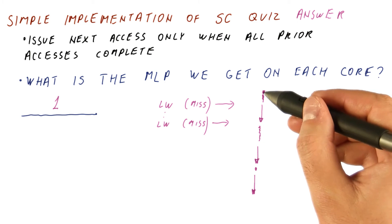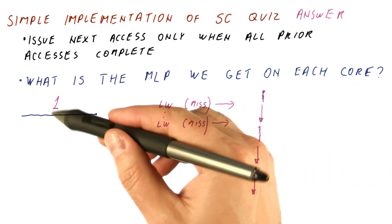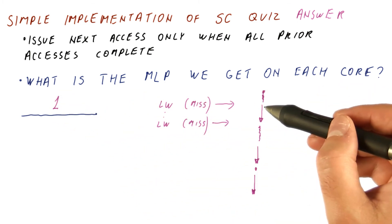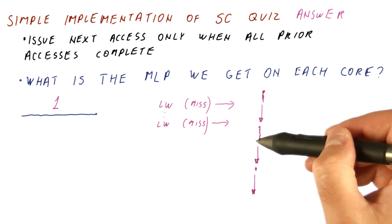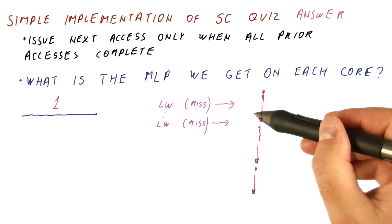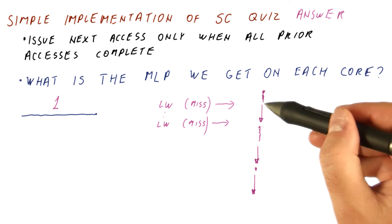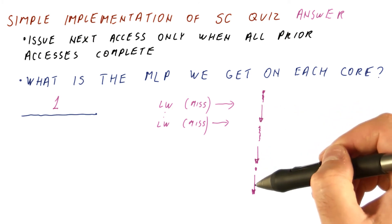So basically our execution with memory level parallelism of one ends up being the execution without the misses plus the time to access memory, which is very large, times the number of misses we have.